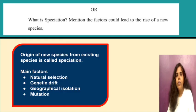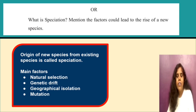What is speciation? The origin of new species from existing species is called speciation. You should also mention the four main factors that could lead to the rise of new species.